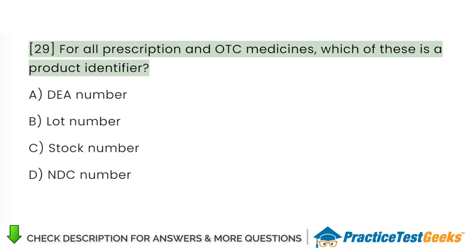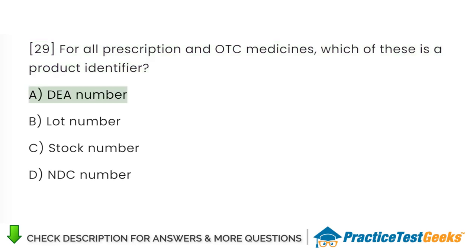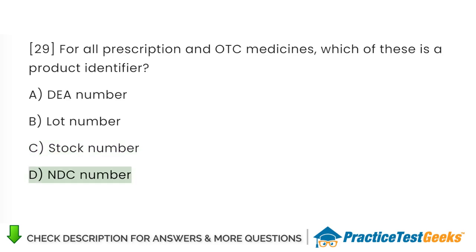For all prescription and OTC medicines, which of these is a product identifier? A. DEA Number. B. Lot Number. C. Stock Number. D. NDC Number.